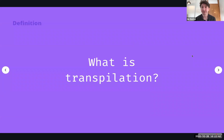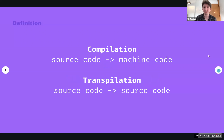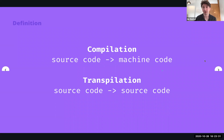The word itself is a portmanteau of what I assume is 'transform' and 'compilation'. Compilation is the process of transforming source code into machine code — transforming code that's written by and can be understood by humans into something that a computer can understand and execute directly. By contrast, transpilation is the process of transforming source code into different source code. So the output of transpilation still needs to be compiled or interpreted if you want to actually execute it on a computer.